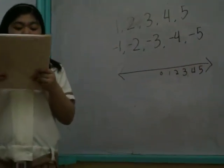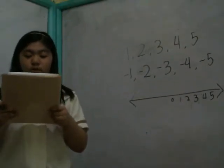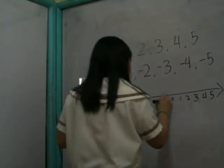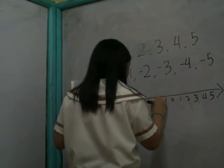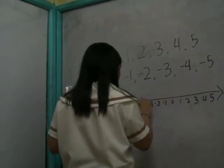The negative integers are to the left of zero: -1, -3, -5.